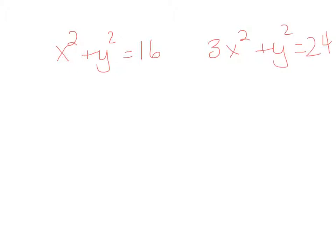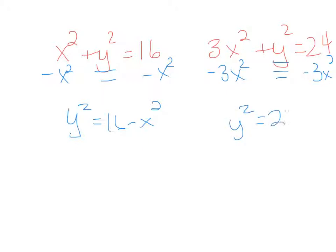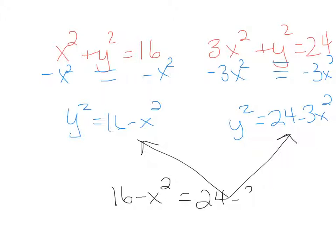All right. So I decided that I noticed that they both had a y squared in them. So I decided to solve each equation for y squared. So I subtracted x squared on this side and subtracted 3x squared on this side. So I changed the equations to y squared equals 16 minus x squared and y squared equals 24 minus 3x squared. Because they're both equal to y squared, I can set them equal to each other. So 16 minus x squared equals 24 minus 3x squared.